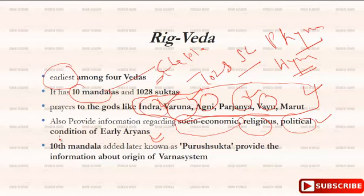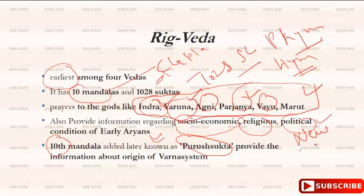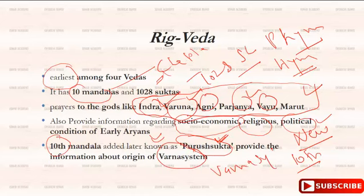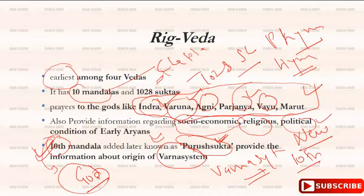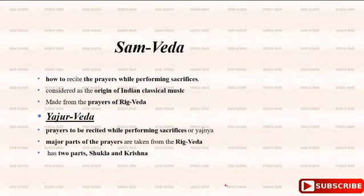Another very important thing related to the caste system is the 10th Mandala of the Rig Veda, where a new thing called Purushasukta was added. In this Purushasukta, information of the Varna system is given. This is very important because the entire caste system of Hinduism comes from here — the 10th Mandala explains how the different castes emerged in Hinduism.